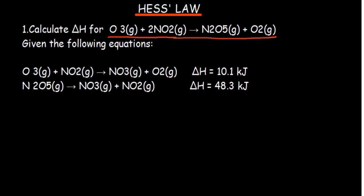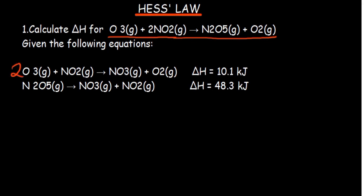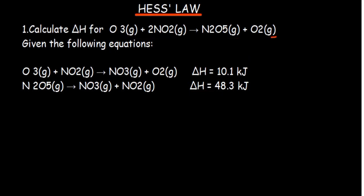Starting with the first equation: if I reverse it — making the products the reactants — I'm supposed to change the sign of the enthalpy as well. If I multiply the entire equation by 2, I'm also supposed to multiply the enthalpy by 2. Whatever we do to the reactions will affect the enthalpies, and then we add them to give us the enthalpy of the overall reaction given on top.